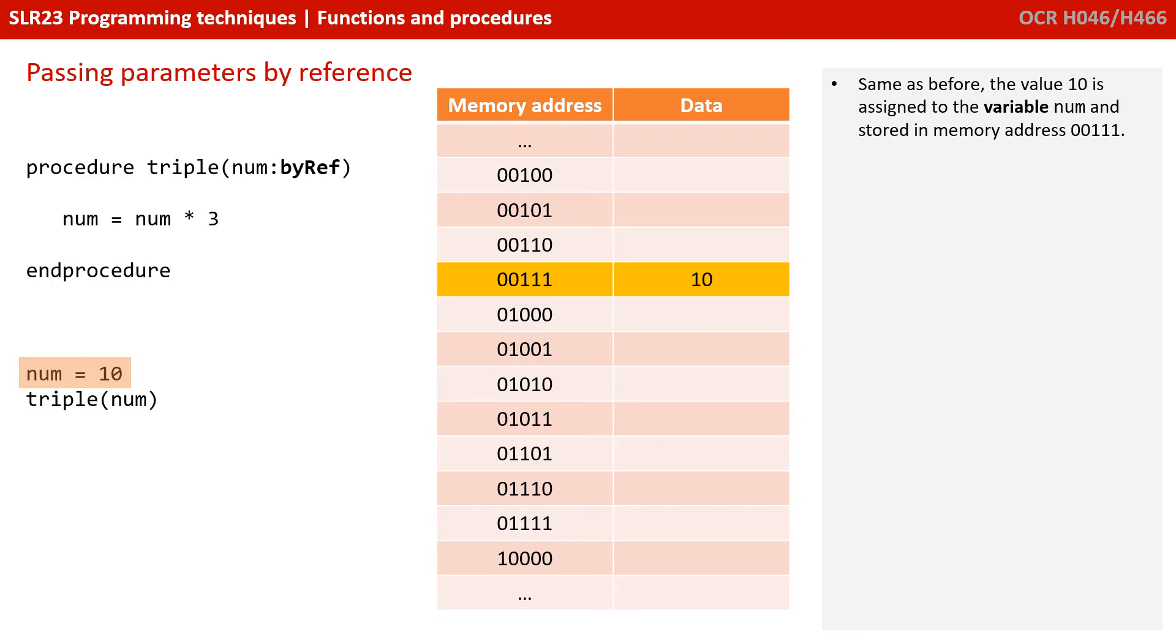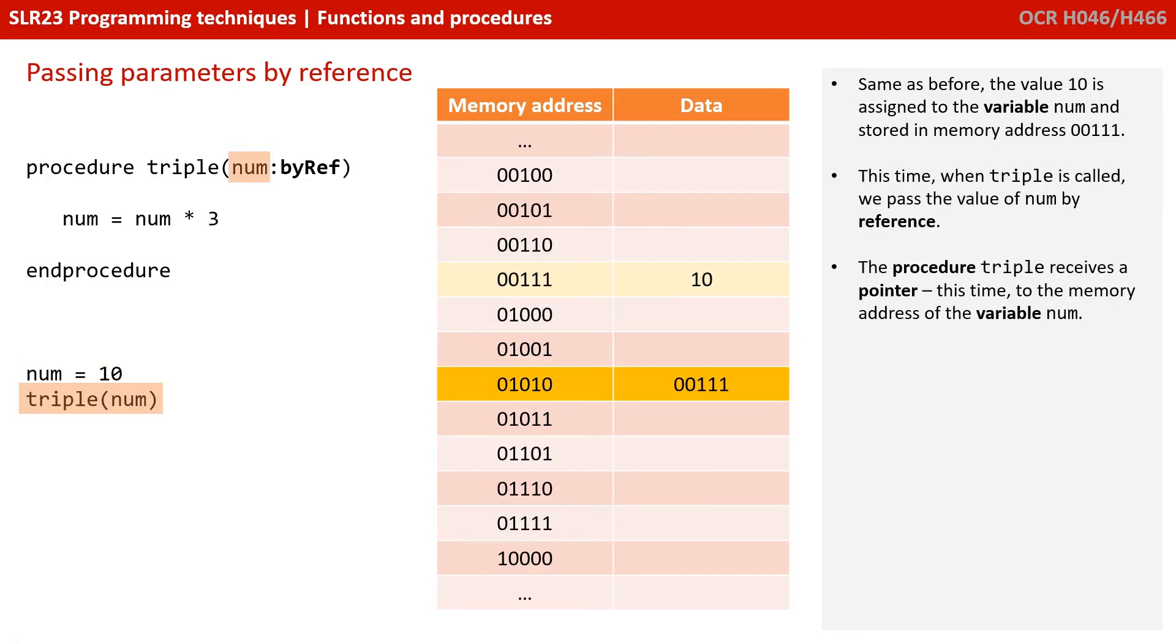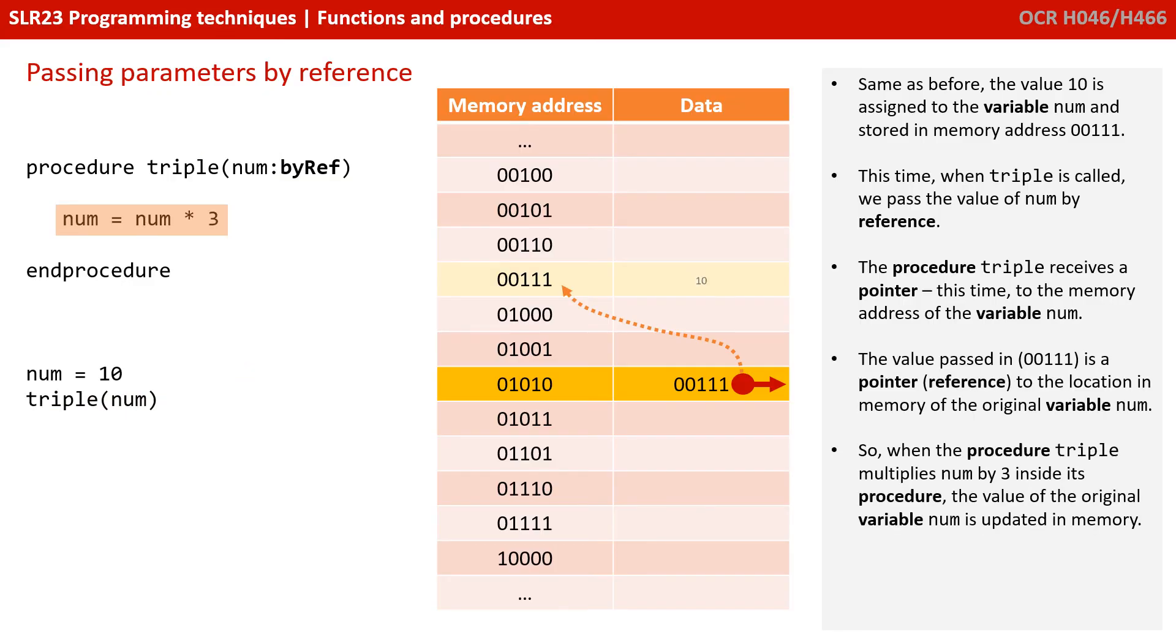Same as before, the value 10 is assigned to the variable num and stored in memory address 00111. This time, when triple is called, we pass the value of num by reference. The procedure triple receives a pointer, this time to the memory address of the variable num. The value passed in 00111 is a pointer or reference to the location in memory of the original variable, so when the procedure triple multiplies num by 3 inside its procedure, it's the value of the original variable num which is updated in memory.